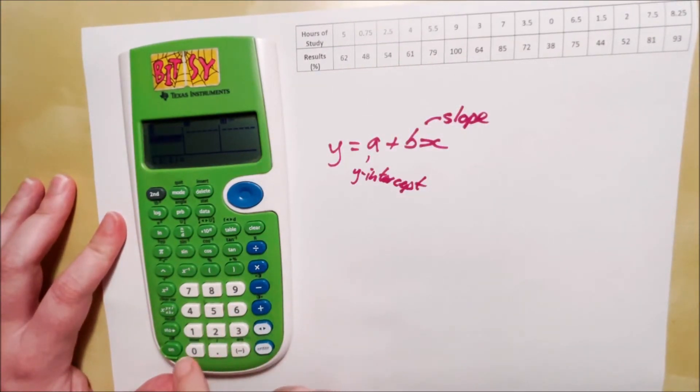Okay, so we're just going to start typing these in. So five, enter, 0.75, enter, 2.5, enter, and keep going like that.